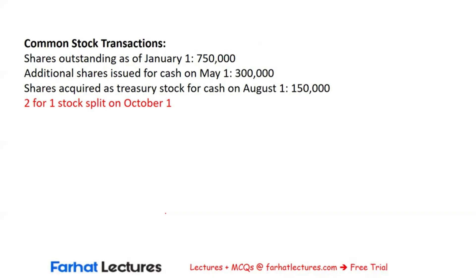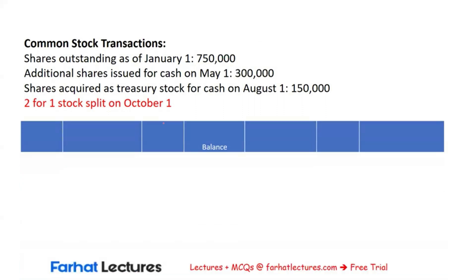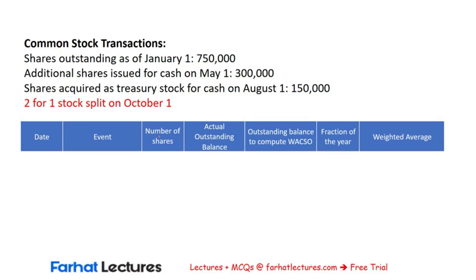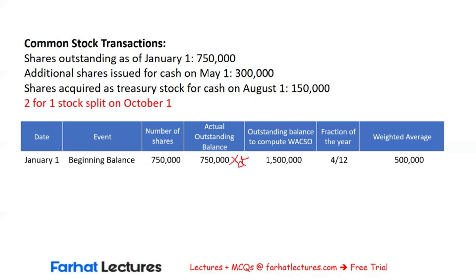Next, we're going to look at the same exercise but with a small twist: there is a 2-for-1 stock split on October 1st. We'll see how this stock split affects the computation of the WACSO and basic EPS using both methods. There is no change in our numerator because there's no change to net income or preferred dividends — the stock split doesn't affect the net income available to common shareholders. However, the WACSO is going to change because the stock split is applied retrospectively. For the beginning balance, the actual outstanding shares are $750,000, and the outstanding balance to compute WACSO is multiplied by 2, giving $1,500,000 multiplied by the fraction of the year, yielding a weighted average of $500,000.